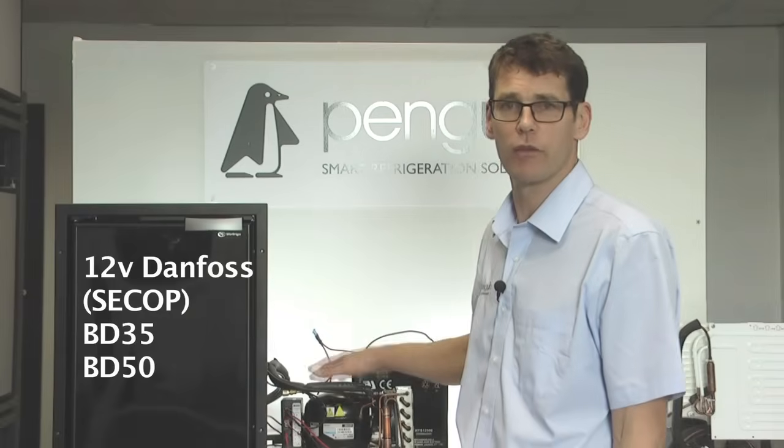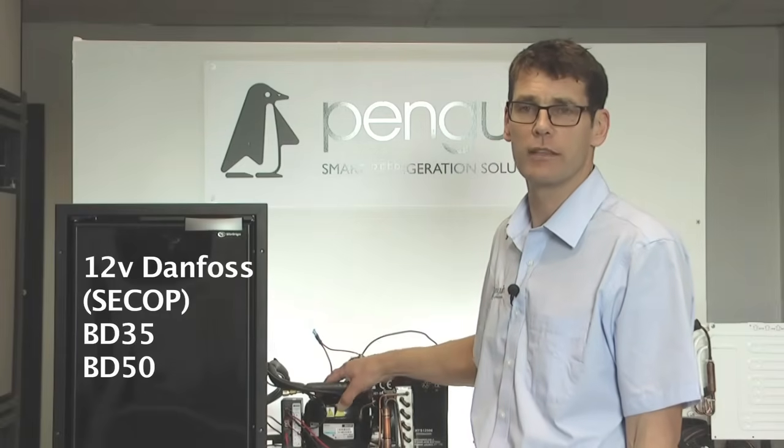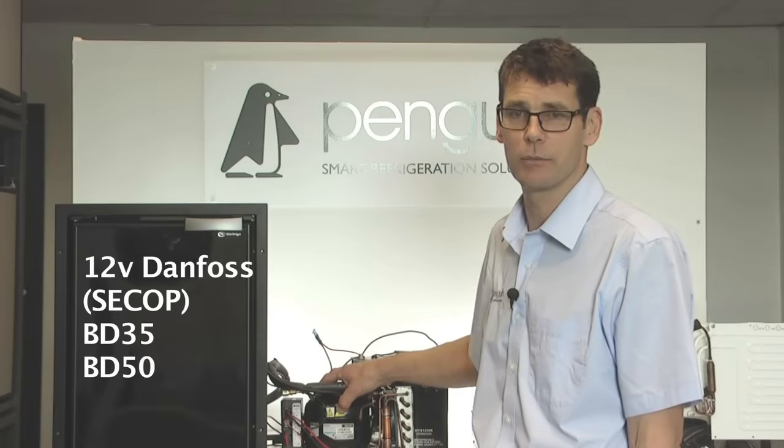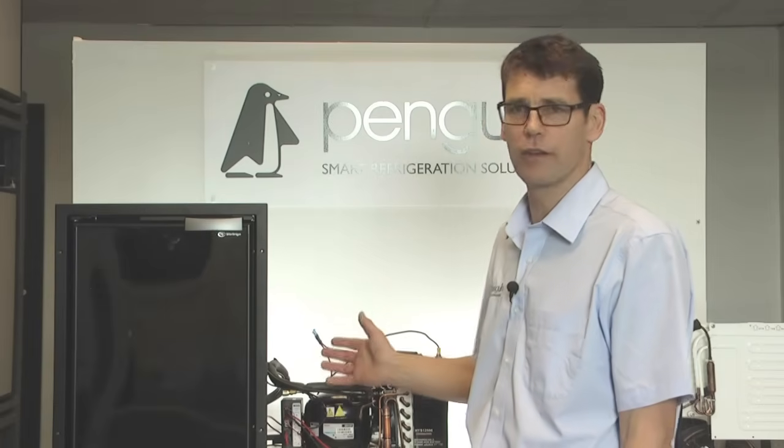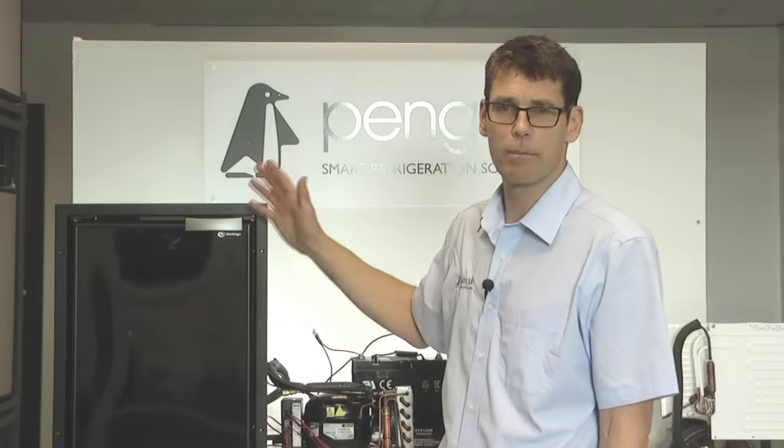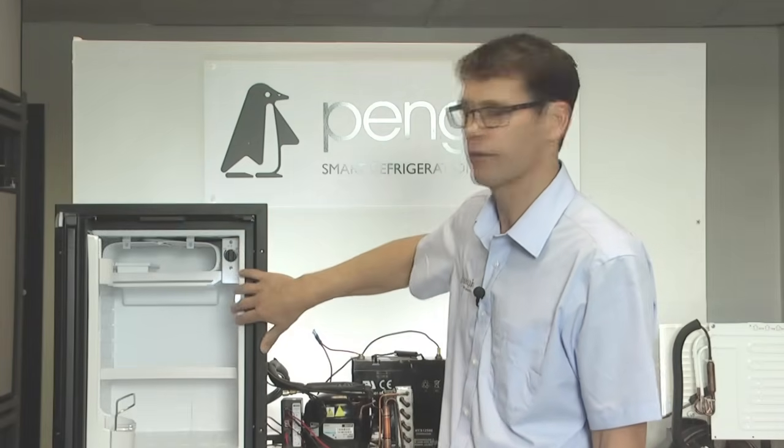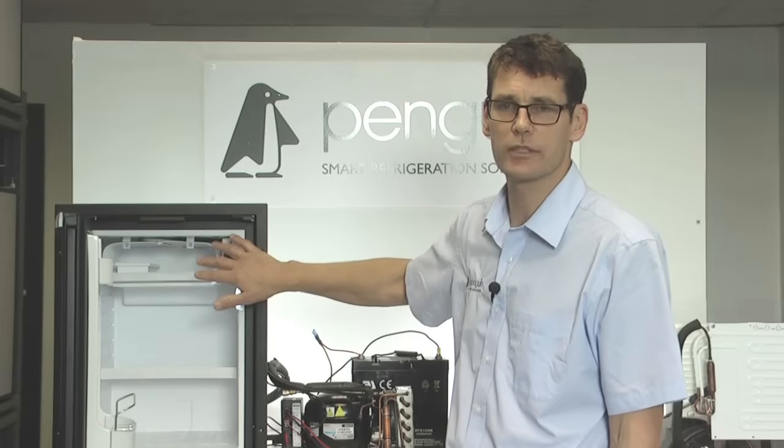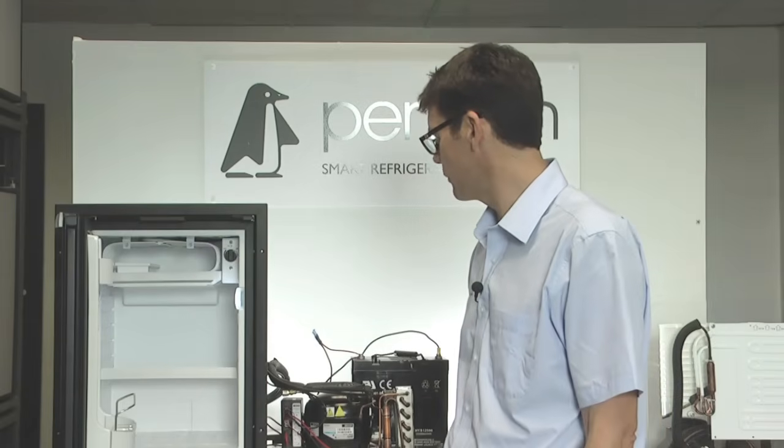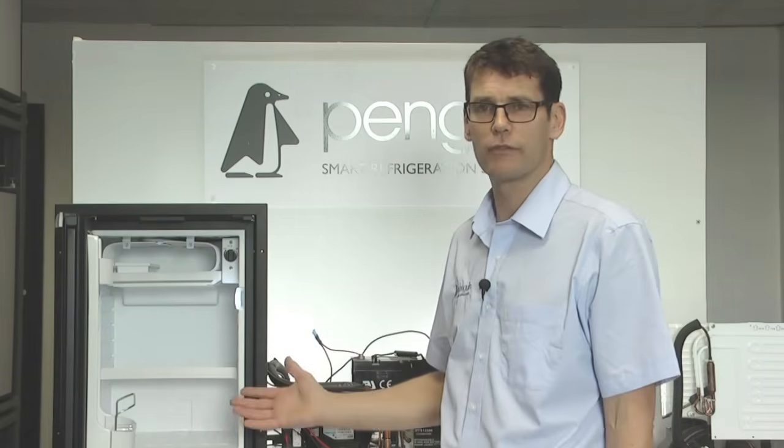This is the second of our Penguin Refrigeration troubleshooting videos, specifically for Danfoss 12 or 24 volt BD35, BD50 compressor fridges. In the first video, we went through the basics of power supply, making sure that there was power coming into the fridge, the light was on, the thermostat was turned on, and whether the fridge was cooling.